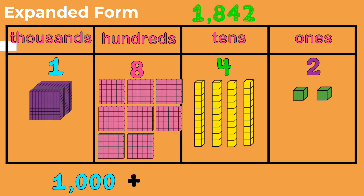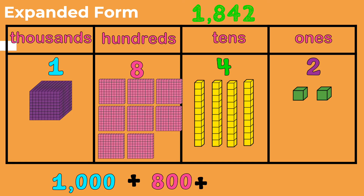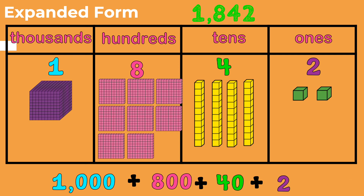Plus, now I am going to figure out the value of the 8 in the hundreds place: 100, 200, 300, 400, 500, 600, 700, 800. 800 is the next number in my expanded form. Plus, now I am going to figure out the value of the 4 in the tens place: 10, 20, 30, 40. Plus 40 would be the next number in my expanded form. Plus, the value of the 2 in the ones place: 1, 2. The value of the 2 is 2. So 1,000 plus 800 plus 40 plus 2 is the number 1,842.